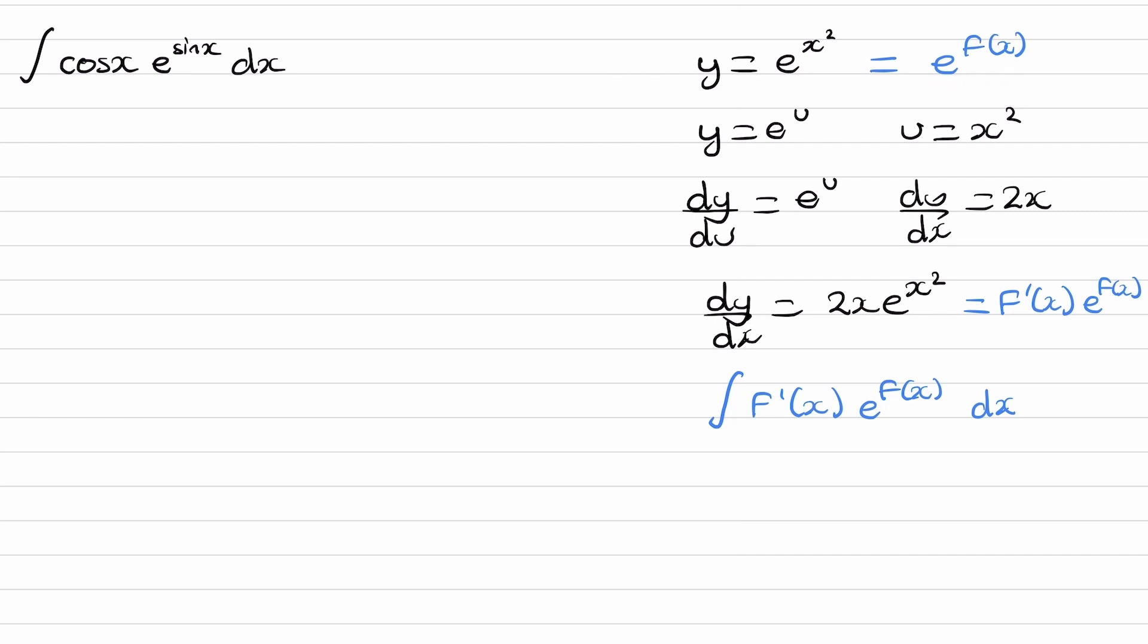just following this process backwards, if this differentiates to make this, then this will integrate to make that. So this should be something of the form of e to the power of f of x. It may be off by a constant, so our solution would be of this form.